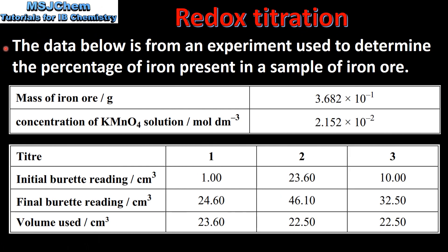Next we look at an example. The data below is from an experiment used to determine the percentage of iron present in a sample of iron ore. In this table we have the mass of iron ore and the concentration of the potassium manganate solution used in the titration.